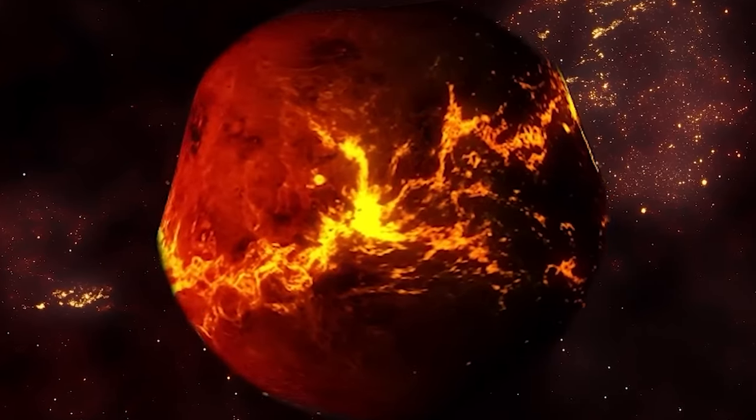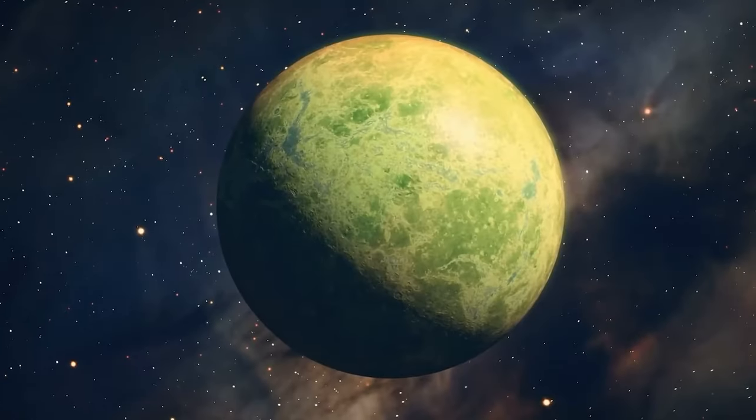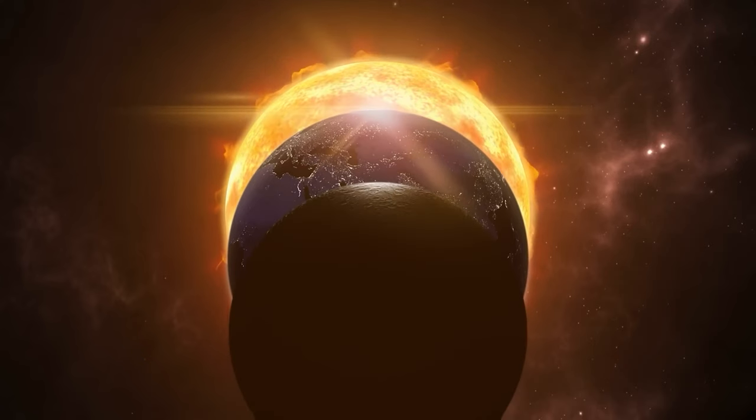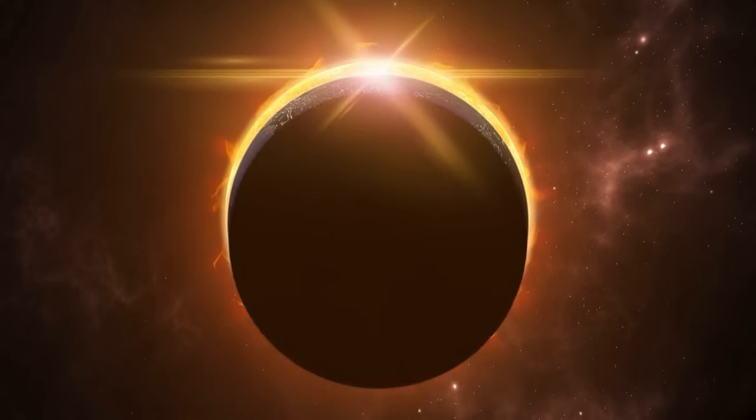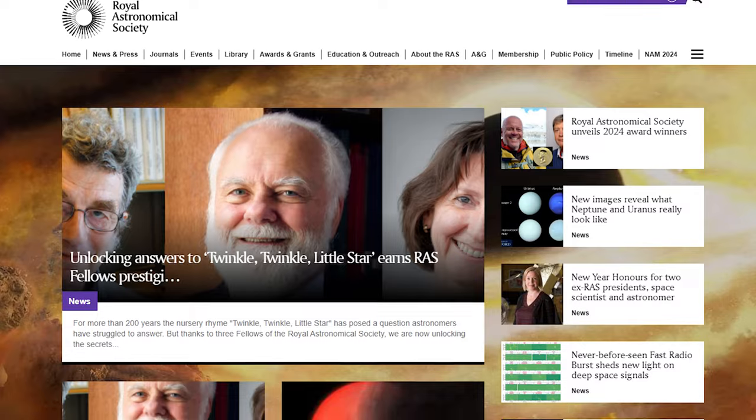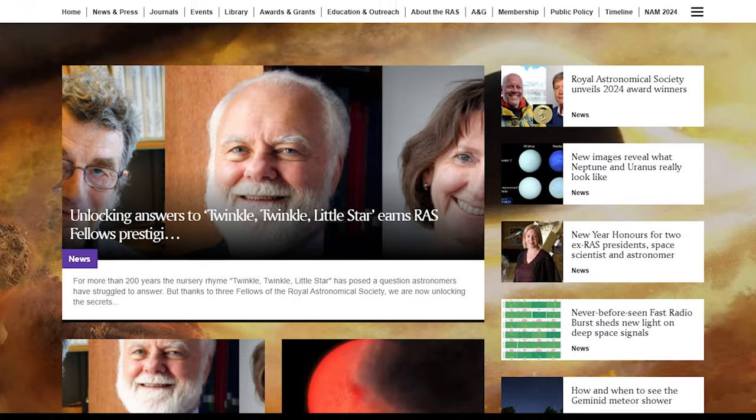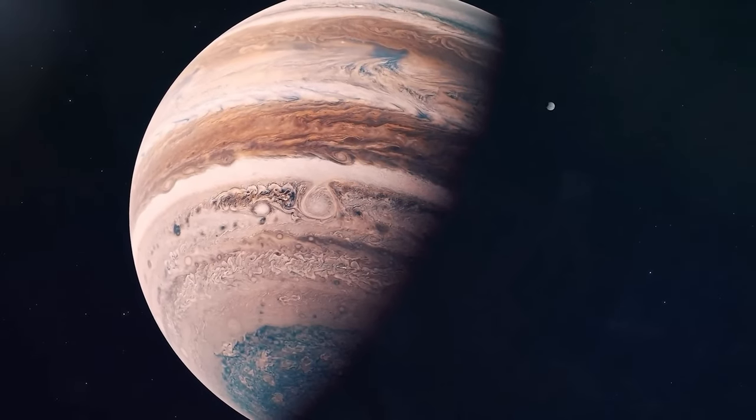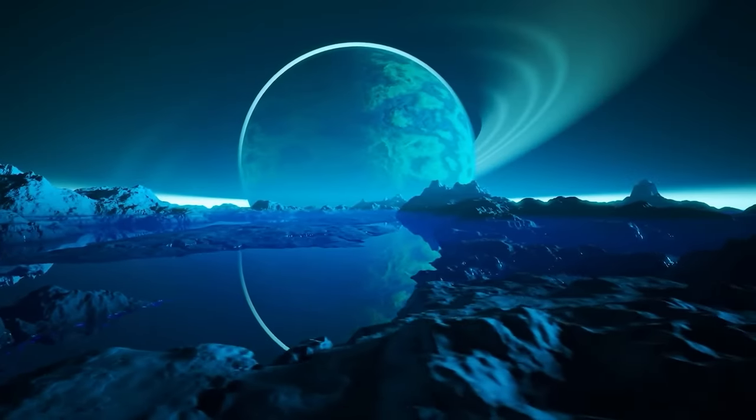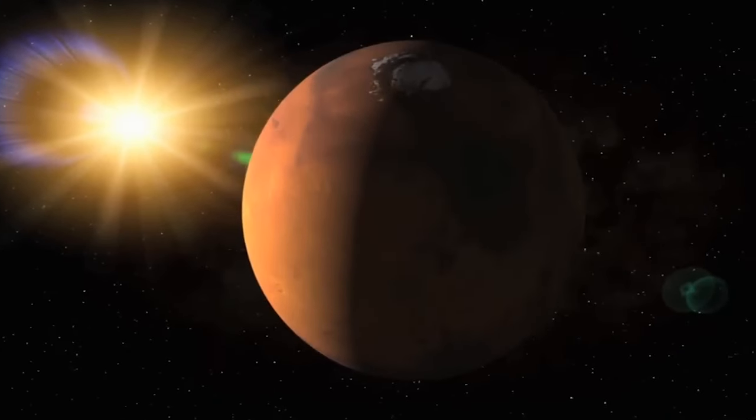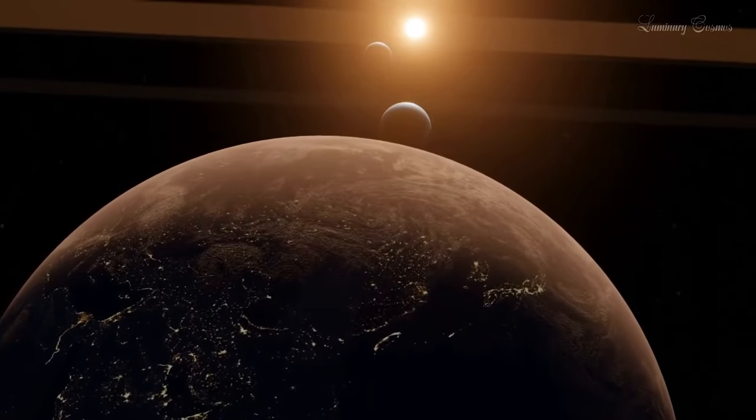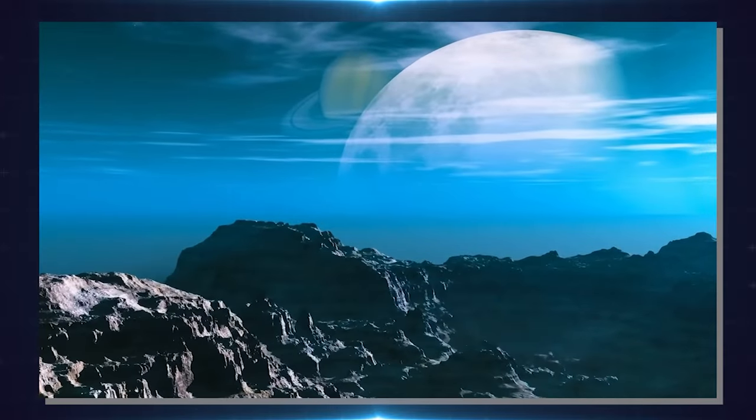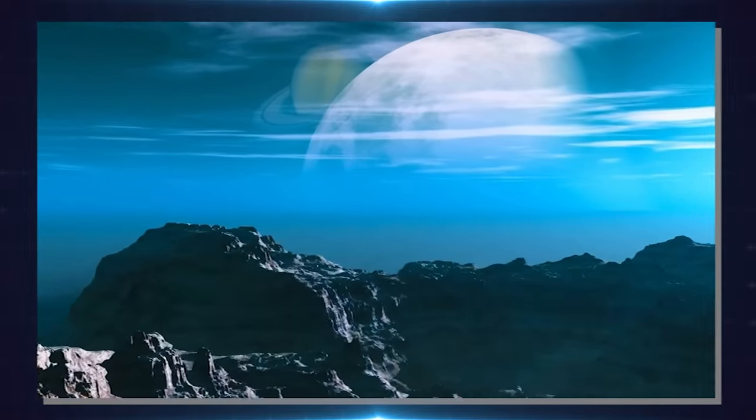Because red dwarves emit less light than the sun, planets like TOI-715b need to be closer to receive enough warmth for potential habitability. A recent study, published in the Monthly Notices of the Royal Astronomical Society, unveils this thrilling discovery. Identifying planets where liquid water might exist is tricky business, especially when it comes to the habitable zone. This zone, though commonly used, has blurry boundaries and can be a bit confusing.